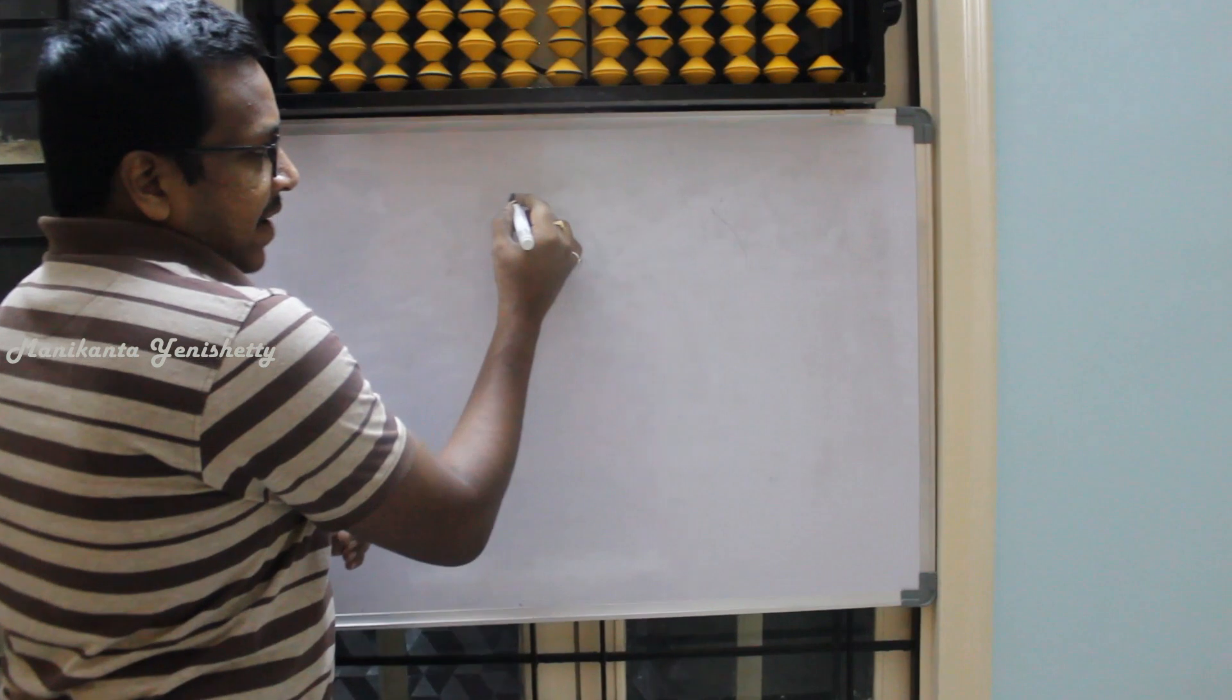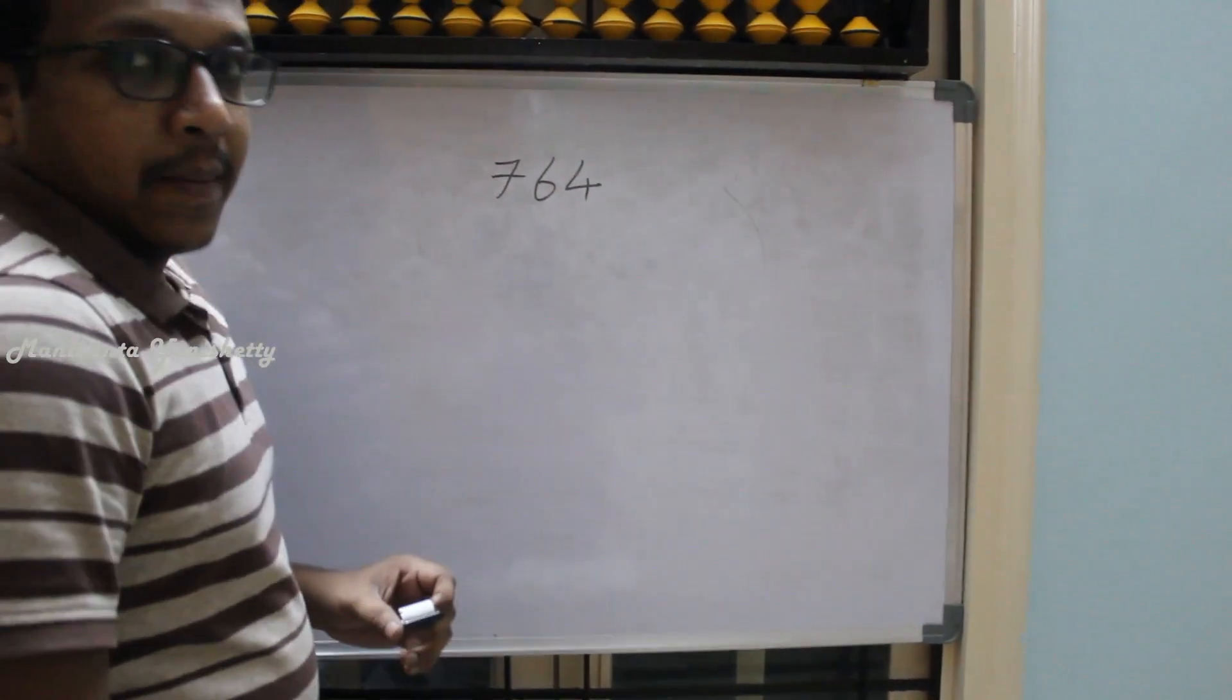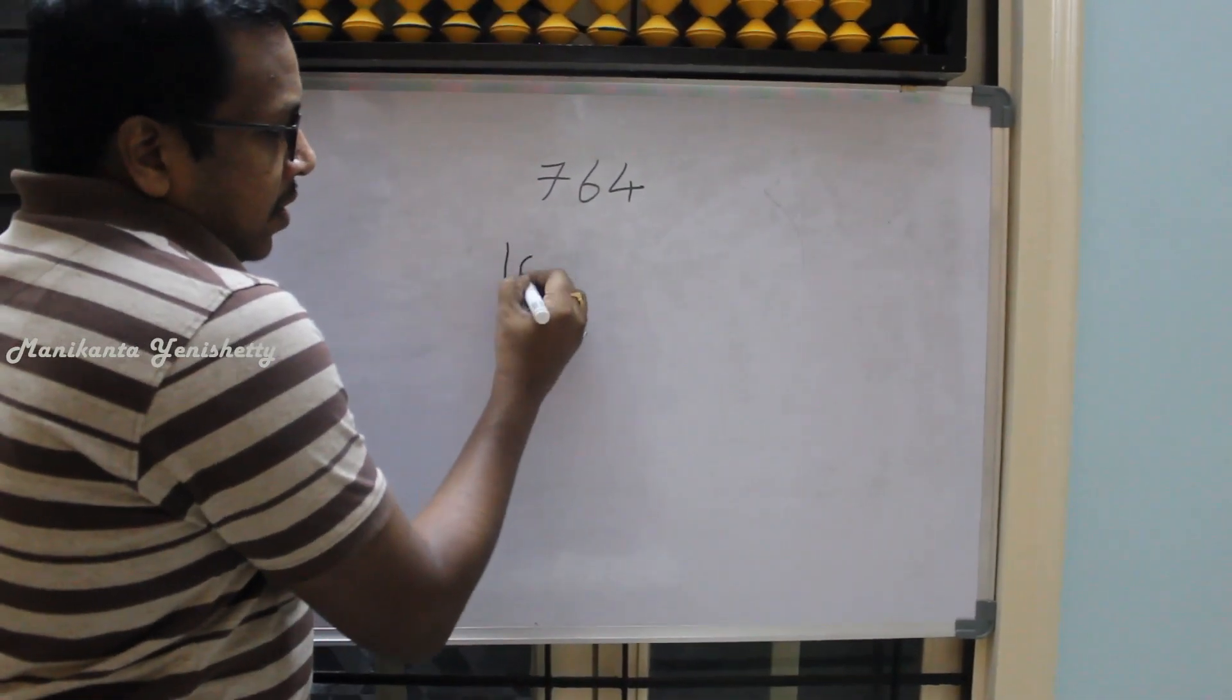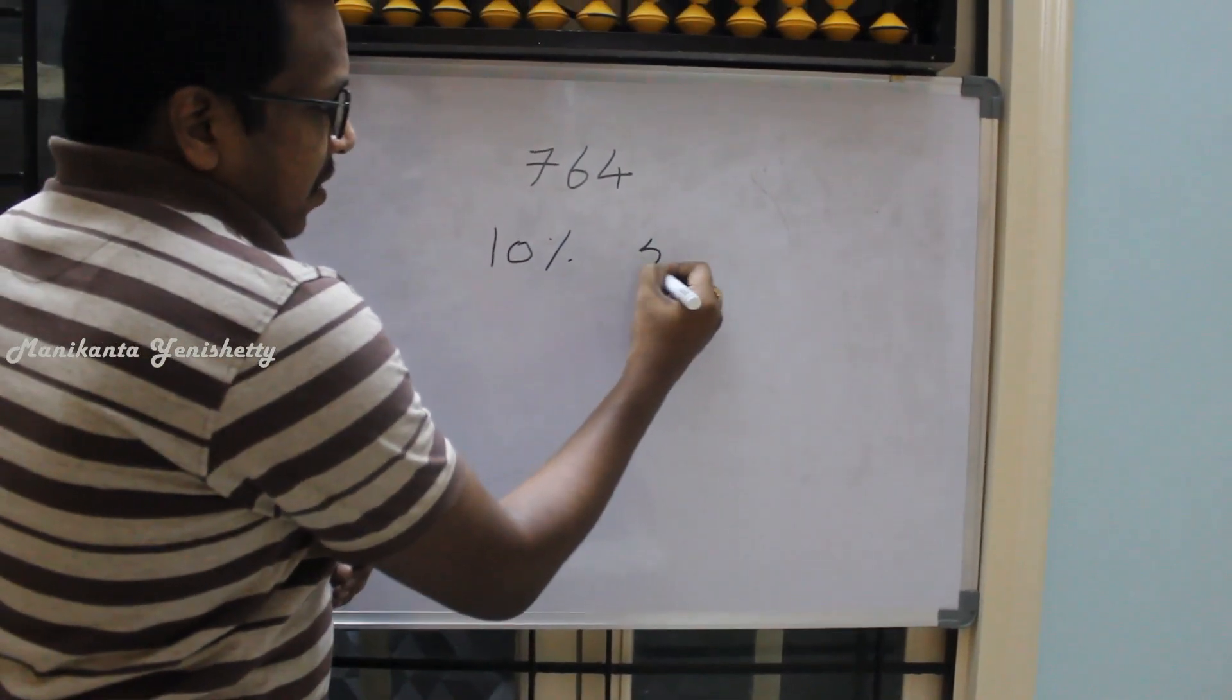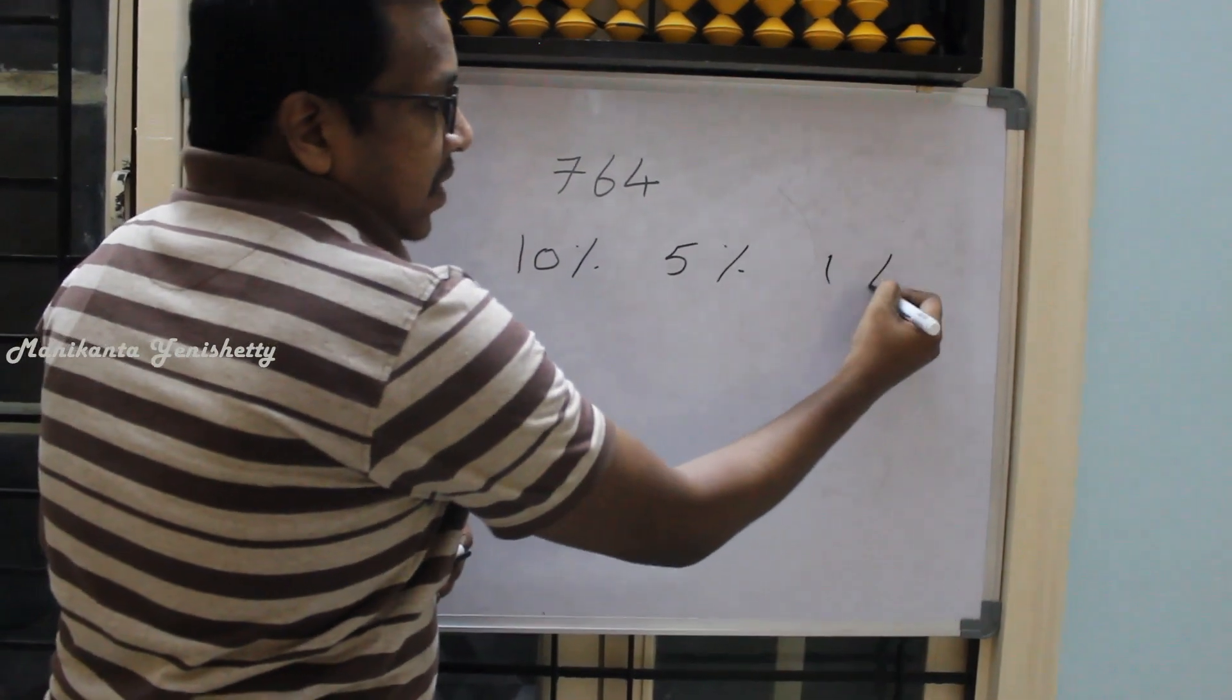For percentages, suppose if I take any number 764. First thing we should know is how to find any percentage - we should know 10%, we should know 5%, and we should know 1%.